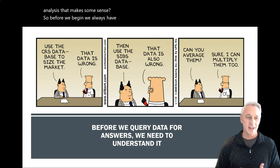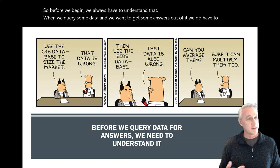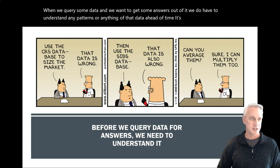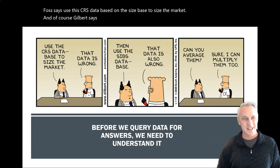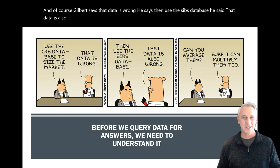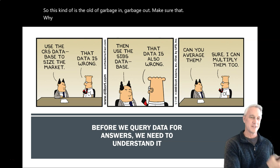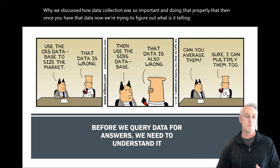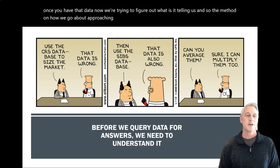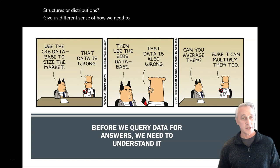So before we begin, we always have to understand that when we query some data and we want to get some answers out of it, we do have to understand any patterns or anything of that data ahead of time. It's always like these little Dilbert cartoons where he says, the boss says use the CRS data to size the market. And of course Dilbert says that data is wrong. He says then use the CIBS database. He said that data is also wrong. Can we average them? Sure, I can multiply them too. So this kind of is the old axiom of garbage in, garbage out. Make sure that's why we discussed how data collection was so important and doing that properly, that then once you have that data, now we're trying to figure out what is it telling us. And so the method on how we go about approaching that matters as well because different types of data patterns or different types of data structures or distributions give us different sense of how we need to approach whatever the questions that we want to ask of this data.